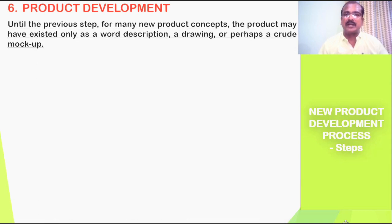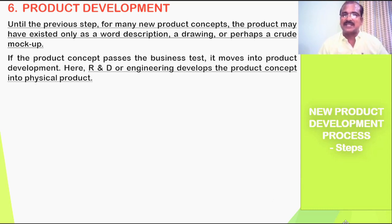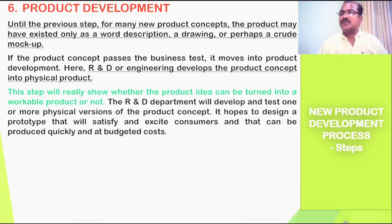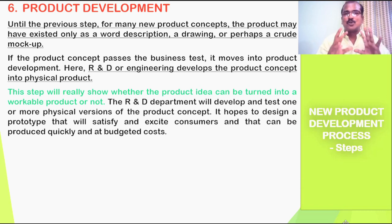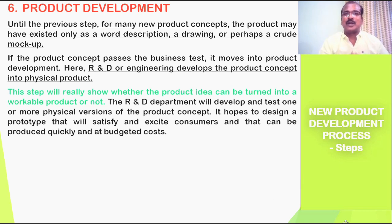The sixth step is product development. Until the business analysis stage, the product may have existed only as a word description, a drawing, or a crude mock-up. If the product concept passes the business test, it moves into product development, where the actual product — a model or at least a prototype — is developed. The R&D or engineering department develops the product concept into a physical product.